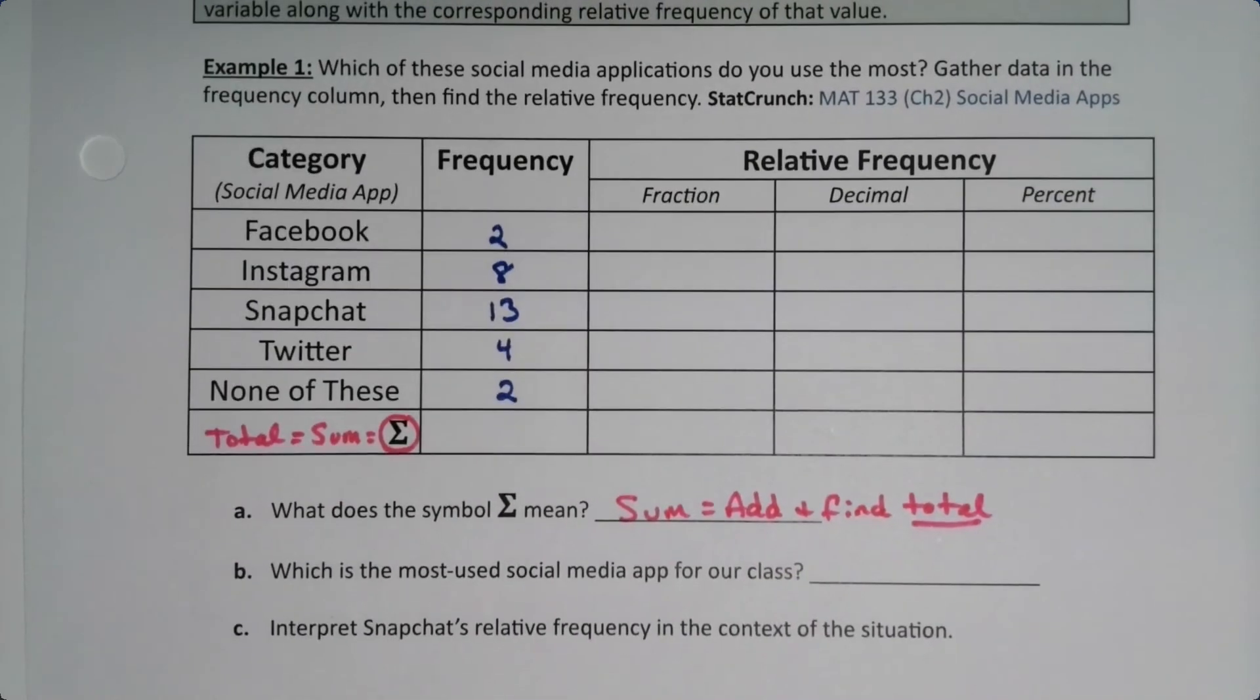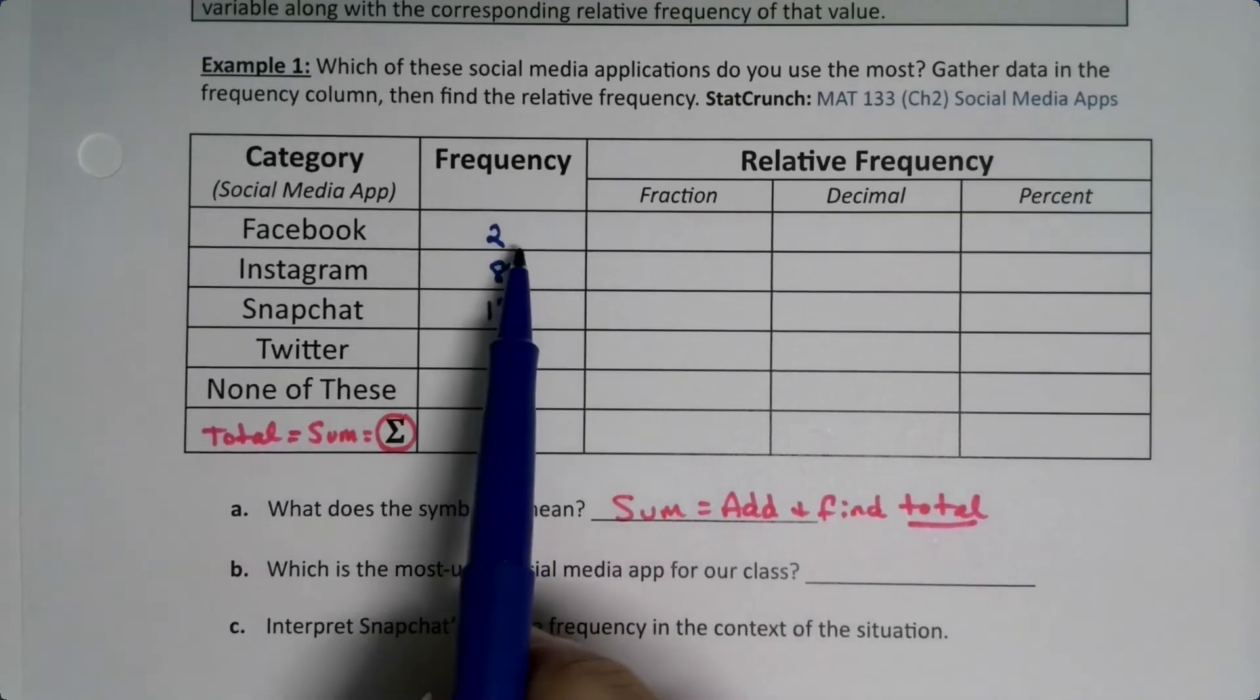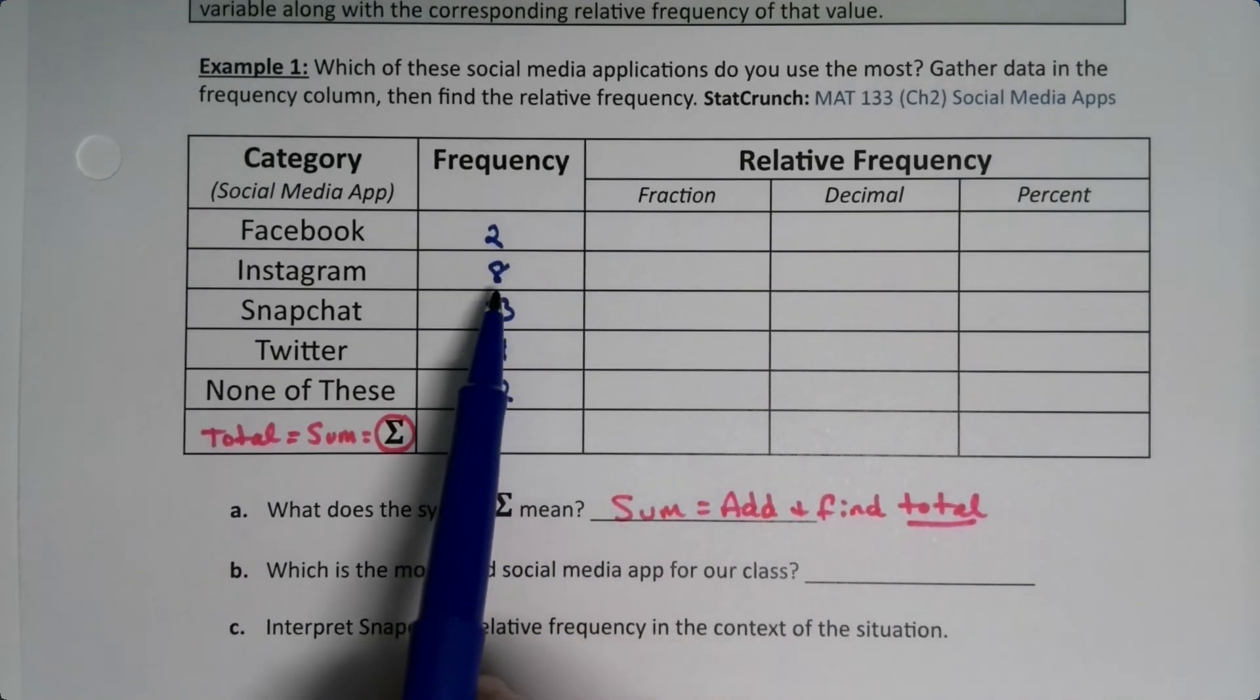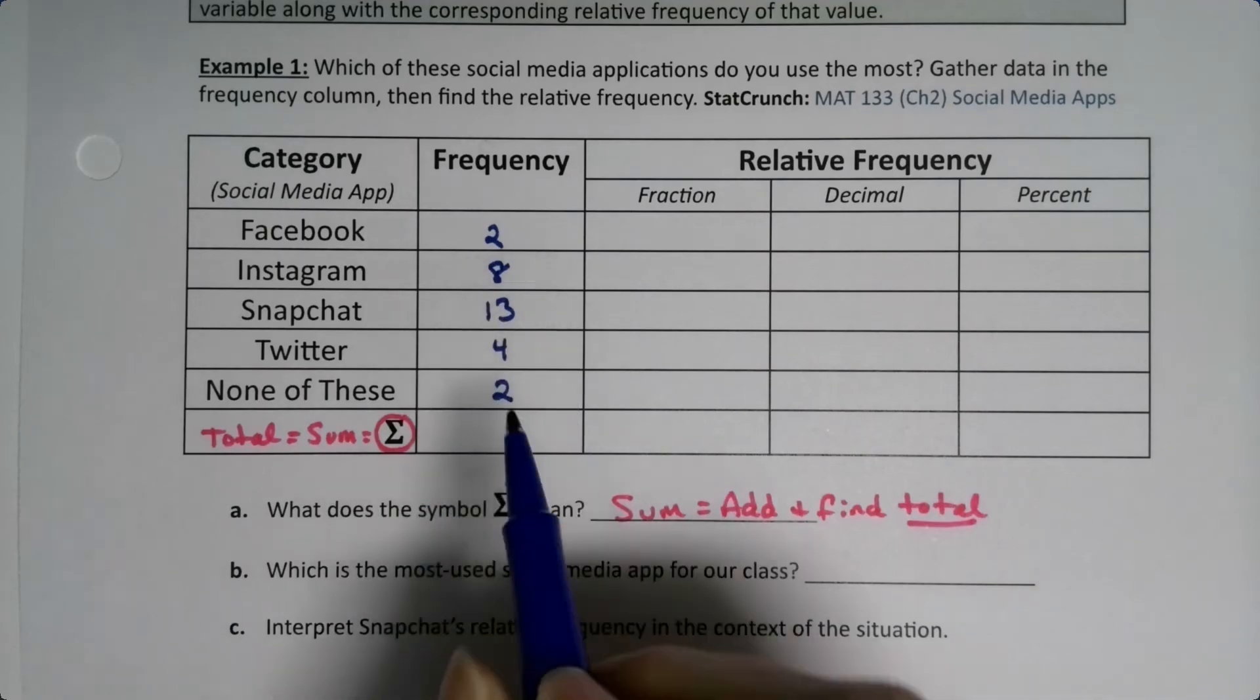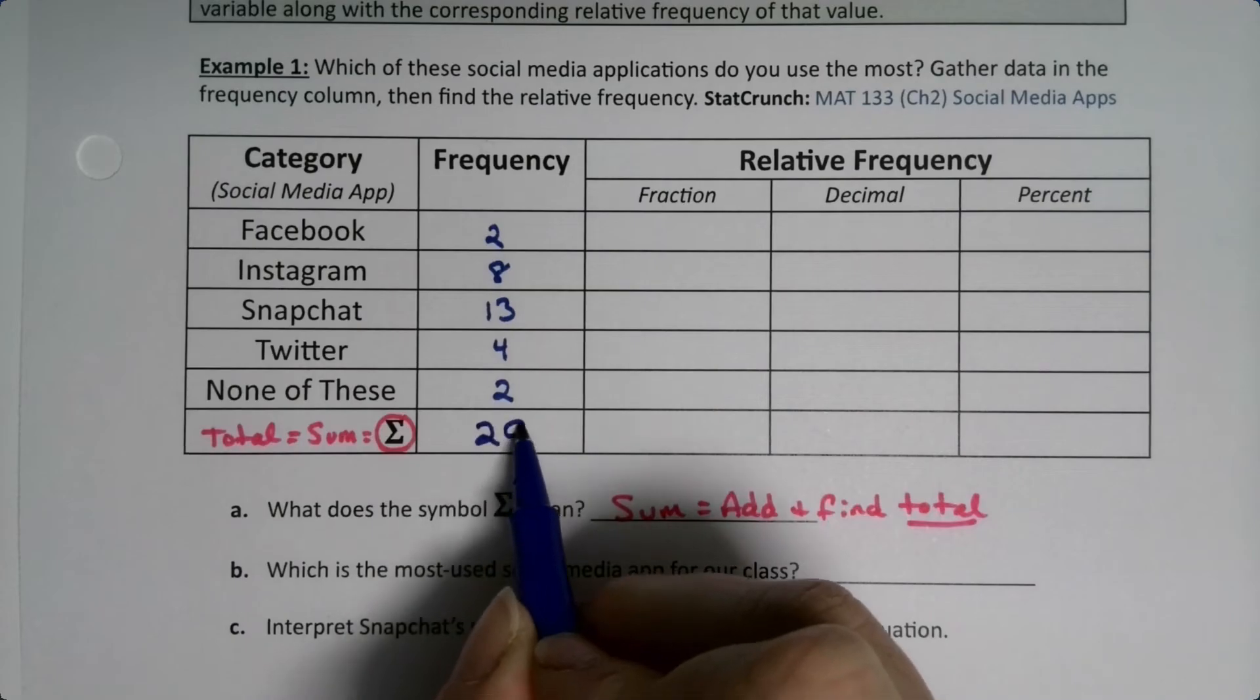So that's the first answer down here actually. It means we have to add and find the total. All right, well we can just add these up. So 8 and 2 is 10, 10 plus 13 is 23, 27, 28, 29. So the total down here is 29.